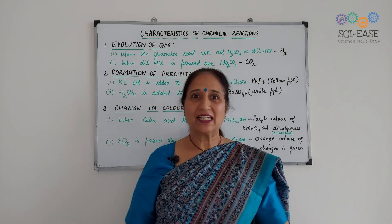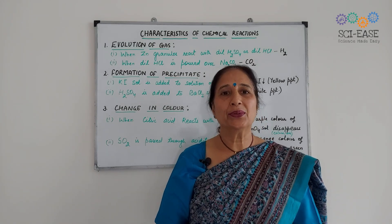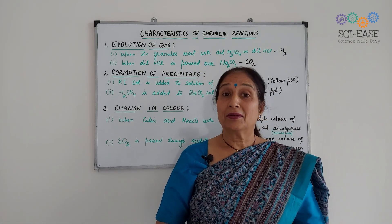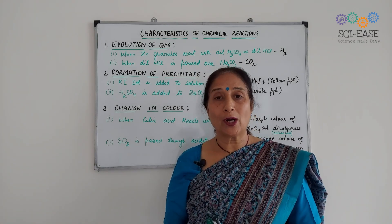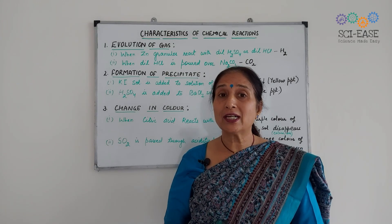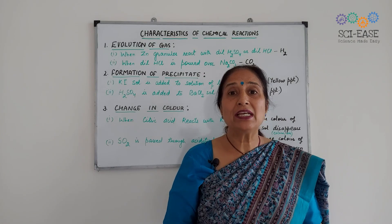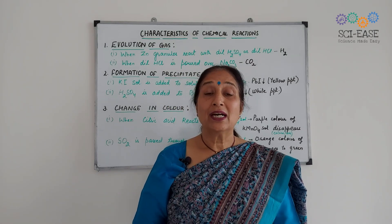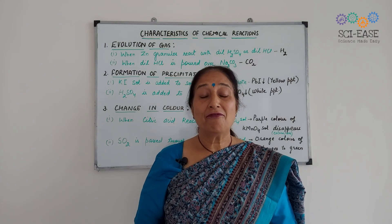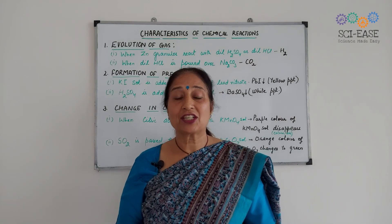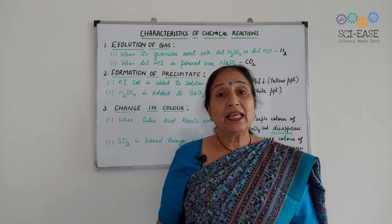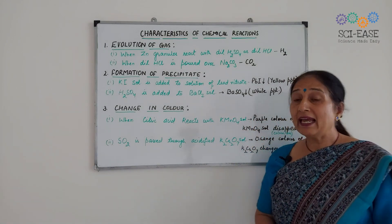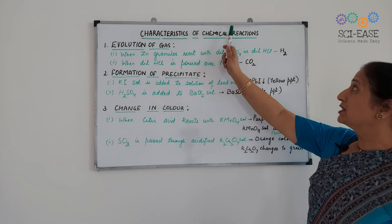Hello everyone. Welcome to SciEase. In the last video I told you about what chemical reactions are — when the reactants are changed into the products and the properties of the products are altogether different from the reactants, we say that a chemical reaction has taken place. In this video I will discuss some features which are accompanied by chemical reactions and these features are easily observable. These features are also known as characteristics of the chemical reactions.